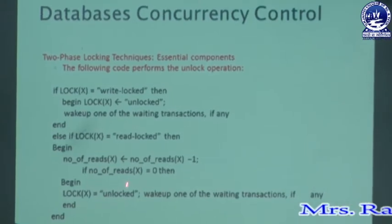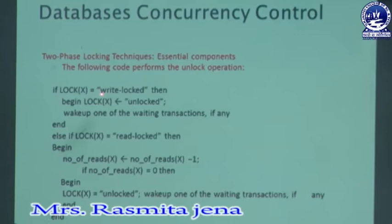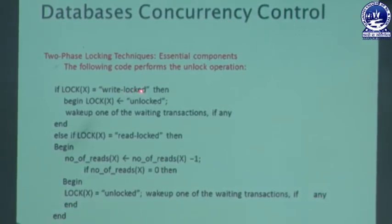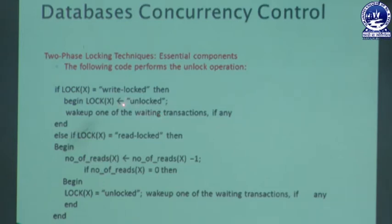After executing read and write operations, the transaction must perform an unlock operation so other transactions can use the item. In the unlock algorithm, we first check if lock X equals write mode. If true, we simply unlock the item, making it free, and the lock manager wakes up one waiting transaction and assigns item X to it.